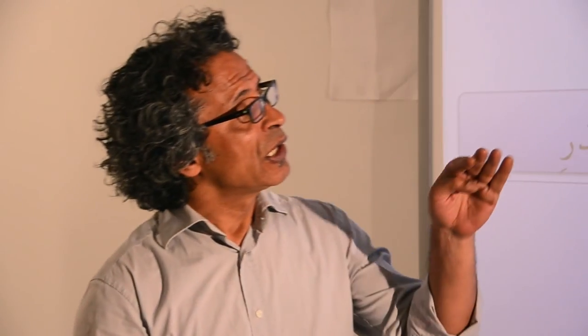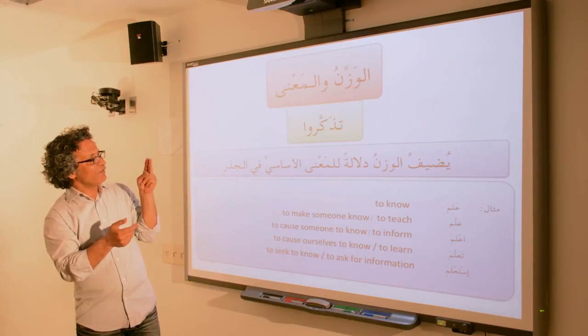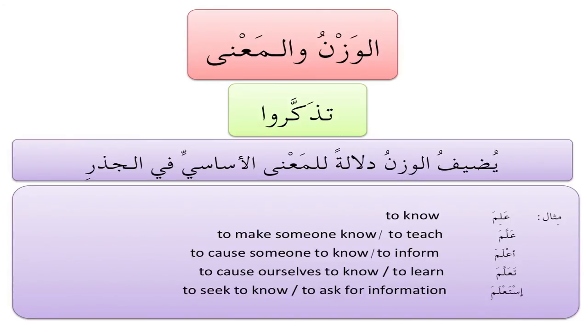وطبعاً عندنا الوزن والمعنى. Remember that these forms or patterns add a denotation to the basic meaning that is in the root. One analogy I use with my students is: the root is like the dough, and the أوزان are like cookie cutters — each one has a shape, and the minute you cut a cookie it follows the shape of that cutter even though the dough is the same. يضيف الوزن دلالةً للمعنى الأساسي في الجذر. Now take a look at these examples using the same root ع-ل-م.